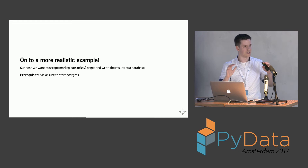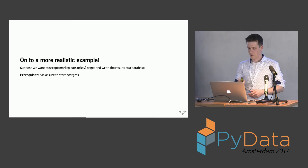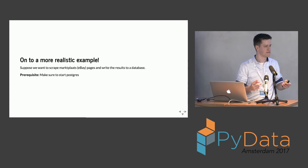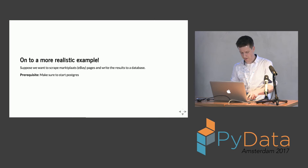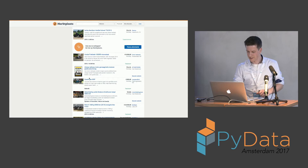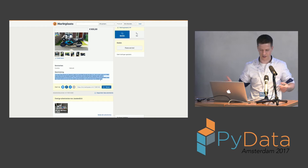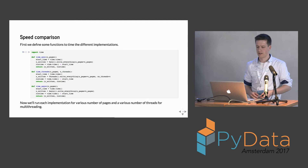Now let's look at a realistic example. We're going to scrape pages from Marktplaats — the Dutch version of eBay where you buy secondhand items. Our program will go to any page of a motorcycle listing and read its description, because we'd like to know what words are used most by people trying to sell their motorcycle. That's the use case of this example.